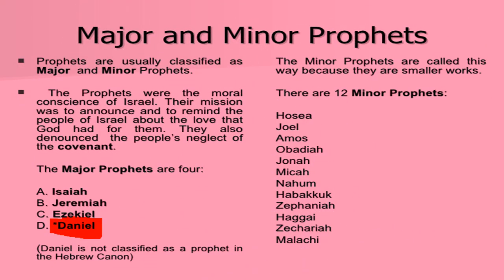God sent a listing of prophets to his people — there are minor and major prophets. Among them are Isaiah, Jeremiah, Ezekiel, and Daniel, who is the subject of our lesson today.